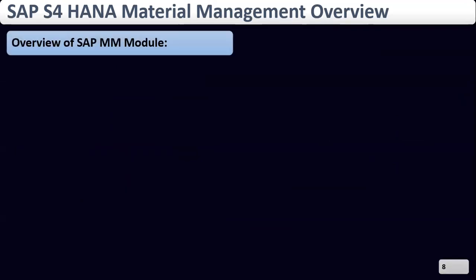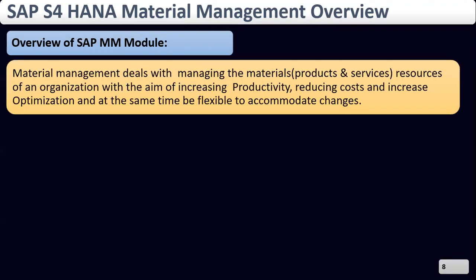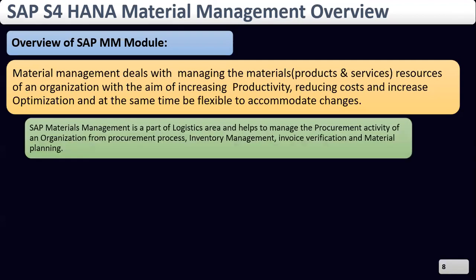Now, overview of SAP MM: what do you mean by material management? Material management deals with managing materials and resources of an organization with the aim of increasing productivity, reducing costs, and increasing optimization, while being flexible to accommodate changes. Material management is part of the logistics area and helps manage procurement activities of an organization, including procurement processes, inventory management, invoice verification, and material planning.